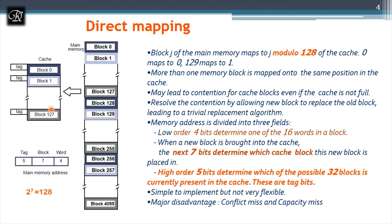If the tag bits match, the block is in cache — a hit. If not, it's a miss, and the block must be fetched from main memory. The replacement position is decided by the modulus function. An advantage of direct mapping is fewer comparators are needed, so hardware requirements are lower.